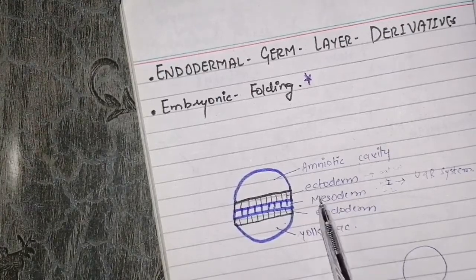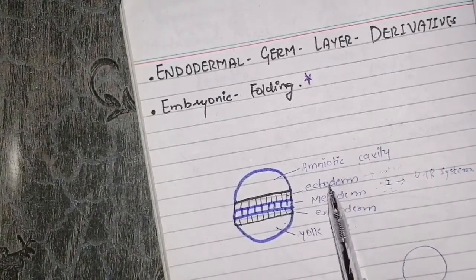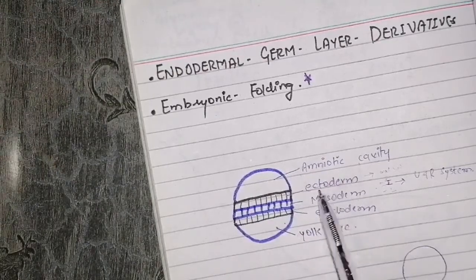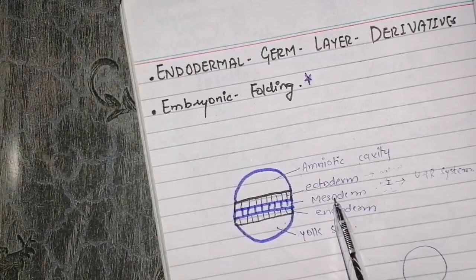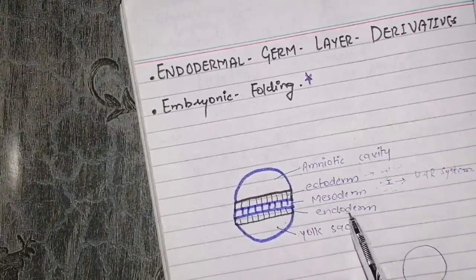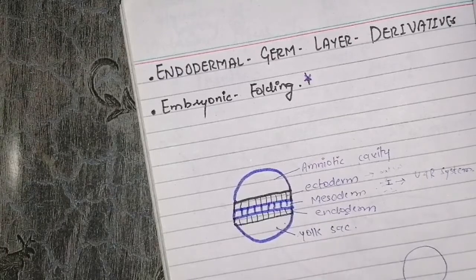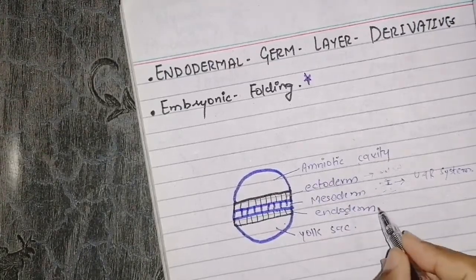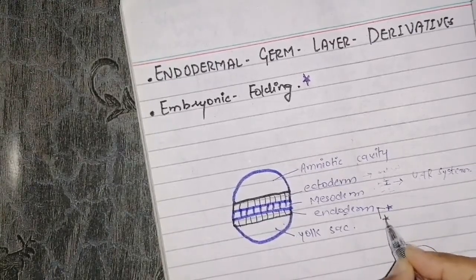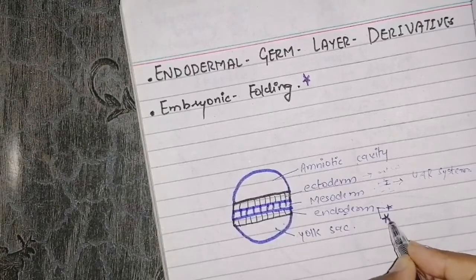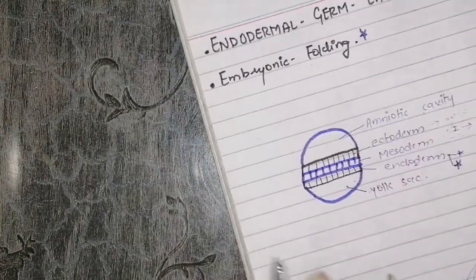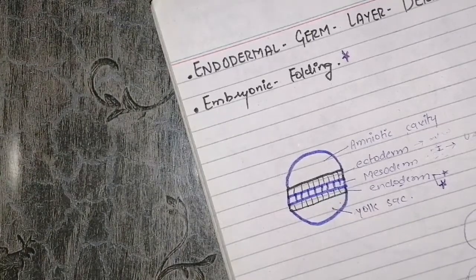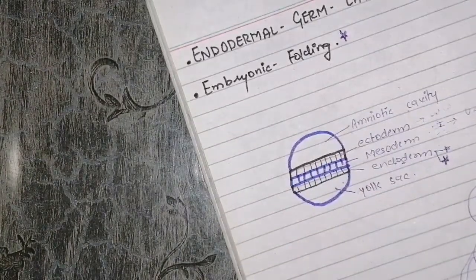Now we have to come to the endoderm. The endoderm — now we need to talk about what the endoderm creates. The rest of the systems and organs are going to come from the endoderm. First let's talk about the digestive system, which is very important, and also the respiratory system, because if these two systems work, survival would be very difficult without them. So first let's talk about the endoderm derivatives.